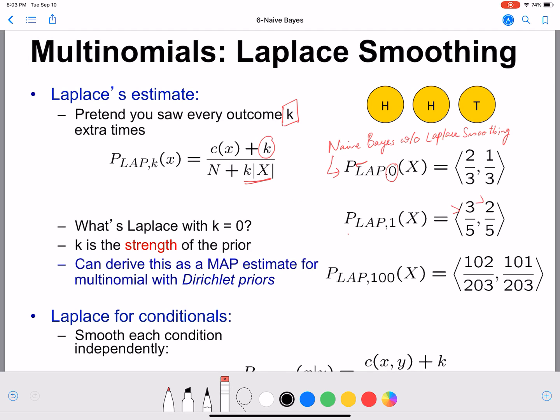Let's look at Laplace smoothing of 100. So for 100 we have 2 plus k is 100, 100 by total tosses 3 plus k is 100, 100 times cardinality of X is 2, so that's nothing but 102/203.